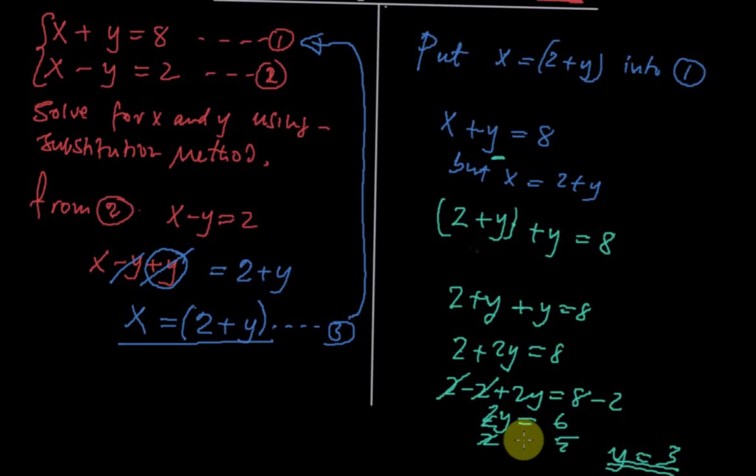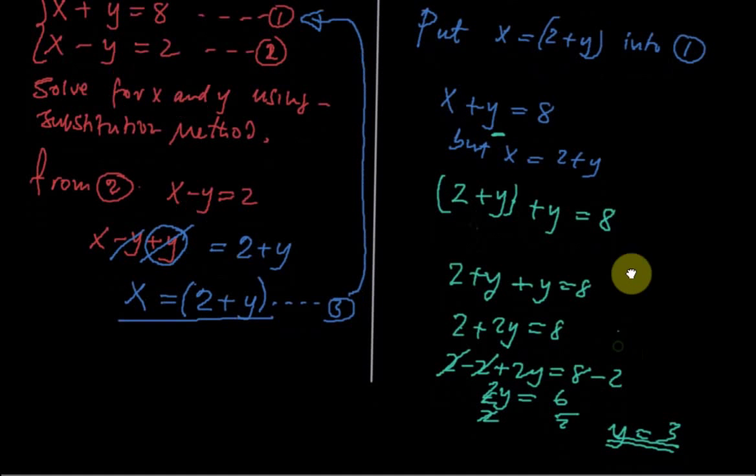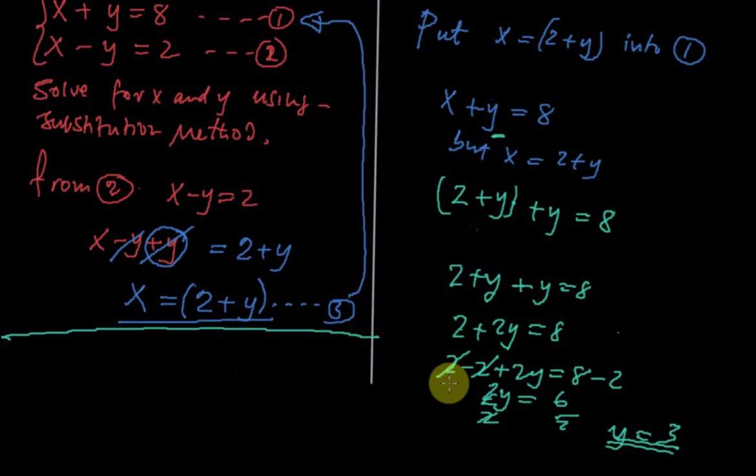So we have our y equal to 3. So if this is the value of y, we have, okay I can draw a line here. You can find the value of x. So we use this. We know that x equal to 2 plus y, but y equal to 3.